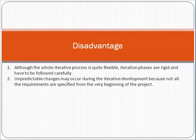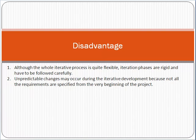The disadvantage of the iterative model is that, although the overall model is quite flexible, the iteration phases are rigid and have to be followed carefully. Unpredictable changes may occur during iterative development because not all requirements are specified from the very beginning of the project. The very big disadvantage is that unexpected changes may occur because documentation is weak in this model and scoping is not very clear — we are working on a hit-and-trial approach.